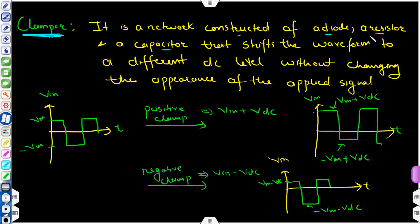The clamper shifts the waveform to a different DC level without changing the appearance of the applied signal. So unlike the clipper circuit, this clamper circuit does not change the appearance of the applied signal. The clipper circuit was clipping the input waveform, so the appearance was changed. But in this case, the clamping circuit is only changing the DC level.